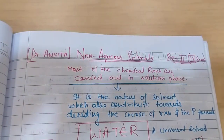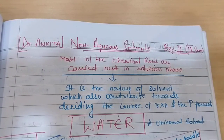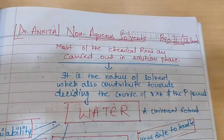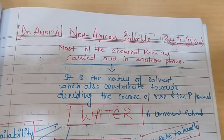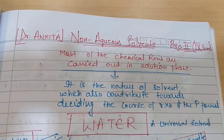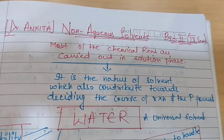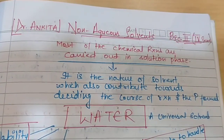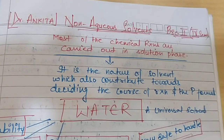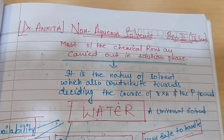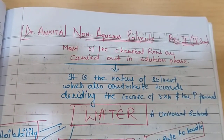I would like to start with non-aqueous solvents. As we all know, most chemical reactions are carried out in solution phase. It is very easy and convenient to carry out any reaction in solution phase rather than reacting in solid or gaseous state, as it is always easy to orient the reactants when they are in solution phase. Also, the nature of the solvent plays a very major role in deciding the course of reaction and the type of product formed.